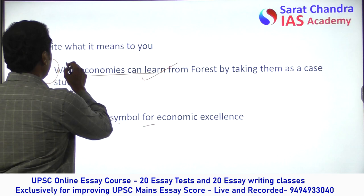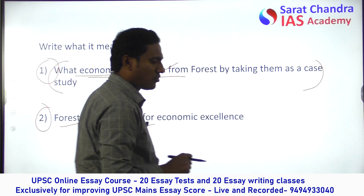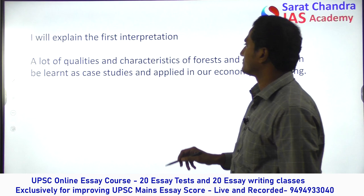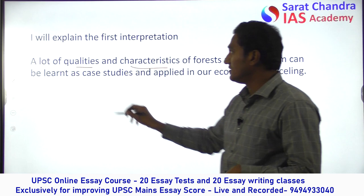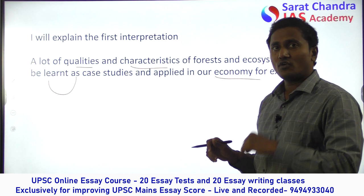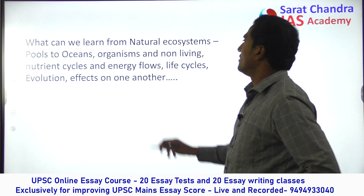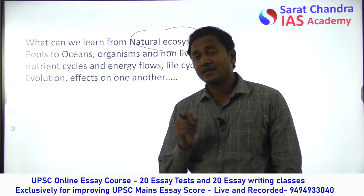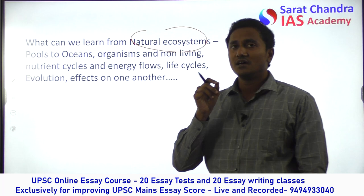Let me discuss my interpretation first. The various qualities or characteristics that you can learn from the forest and apply in the economy to create an excellent economy will be discussed. For example, a forest is a natural ecosystem. Agriculture is an artificial man-made ecosystem, whereas forest is a natural ecosystem. In a natural ecosystem, there is symbiosis between organisms and between organisms and non-living elements like water, soil, and sunlight.